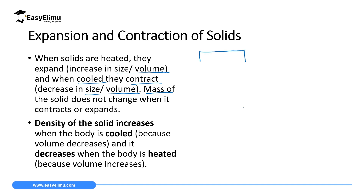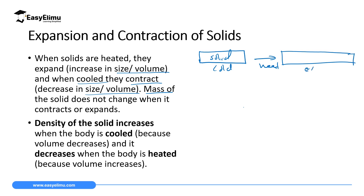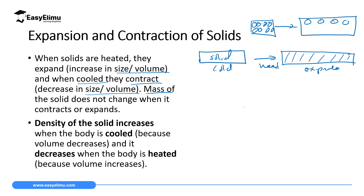For example, if you have a solid of a certain size when cooled, and then you heat it, it will occupy a relatively larger size — this is when it has expanded. The size will change but the mass will remain the same, simply because we have not interfered with the particles that make up the matter. We have only made the particles that were close together move slightly far away from each other, so the number of particles remains the same; only the volume they occupy changes.